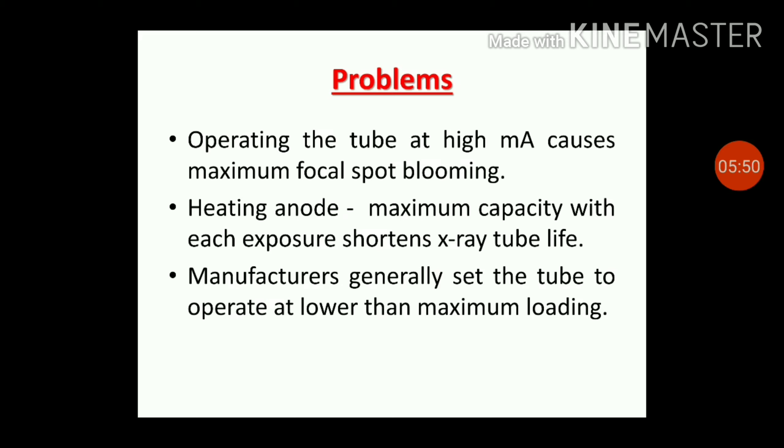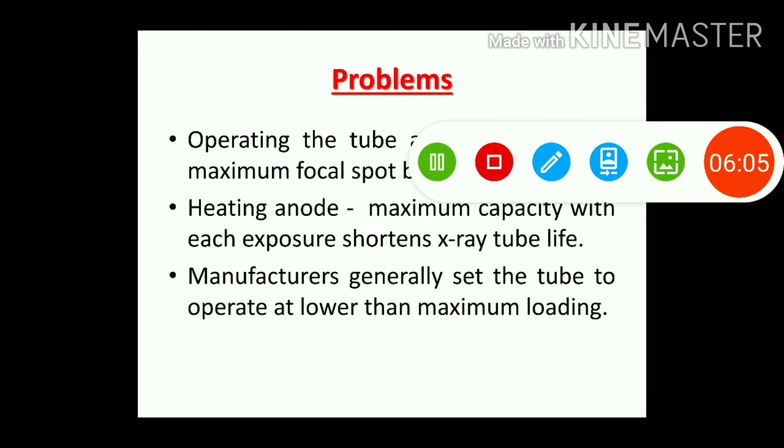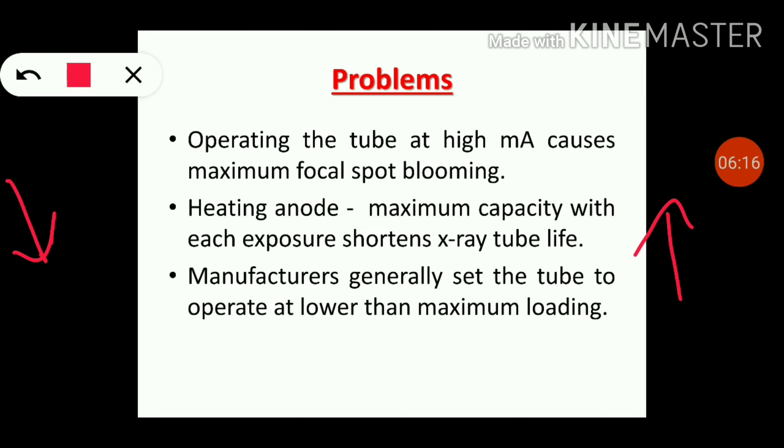Manufacturers generally set the tube to operate at lower than the maximum loading. If you decrease the mA, there is an automatic increase in kV. If some kV compensation is not used, then lowering the mA will raise the kV. Modern falling load generators provide an almost constant kV.